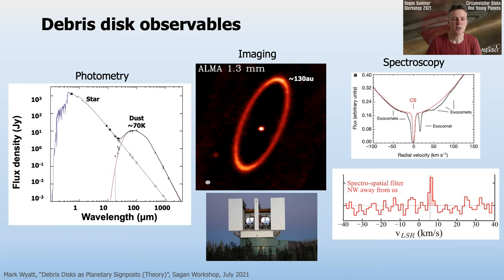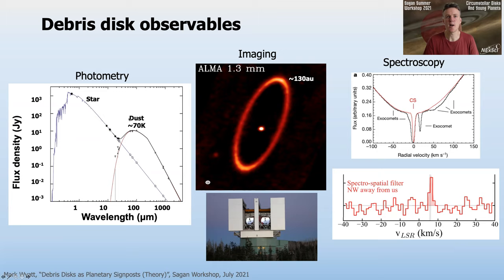To summarize the observables we have for debris — what we might use to interpret something about the planetary system — most debris disks have been discovered using photometry, where we look at the SED, the spectral flux versus wavelength of the star. We expect it to look a certain way, and we see extra emission coming from dust orbiting the star, heated by the star, which then re-radiates that emission. The temperature of this excess tells us something about how far away the dust is from the star. For disks that are near enough and bright enough, we can image them and see exactly where the dust is and tell something about the structure.